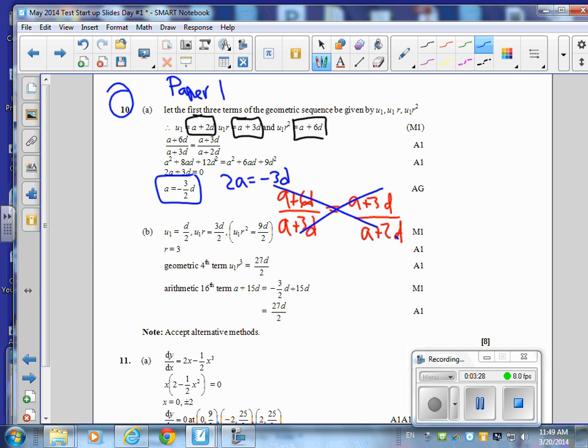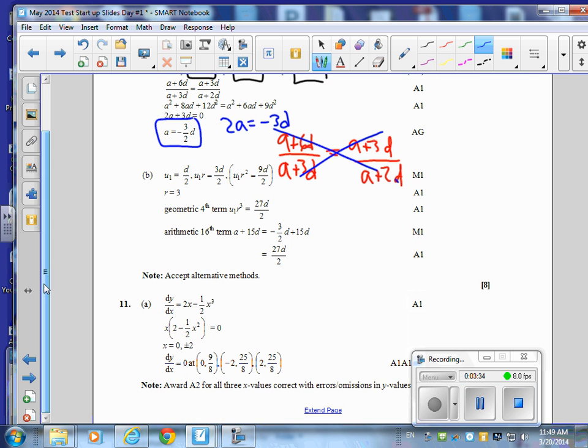For part B it says show that the fourth term, the next term of the geometric sequence, is the 16th term of the arithmetic. So the 16th term, no problem, that's just going to be A plus 15 times D. Isn't that the 16th arithmetic? Is that good for that?